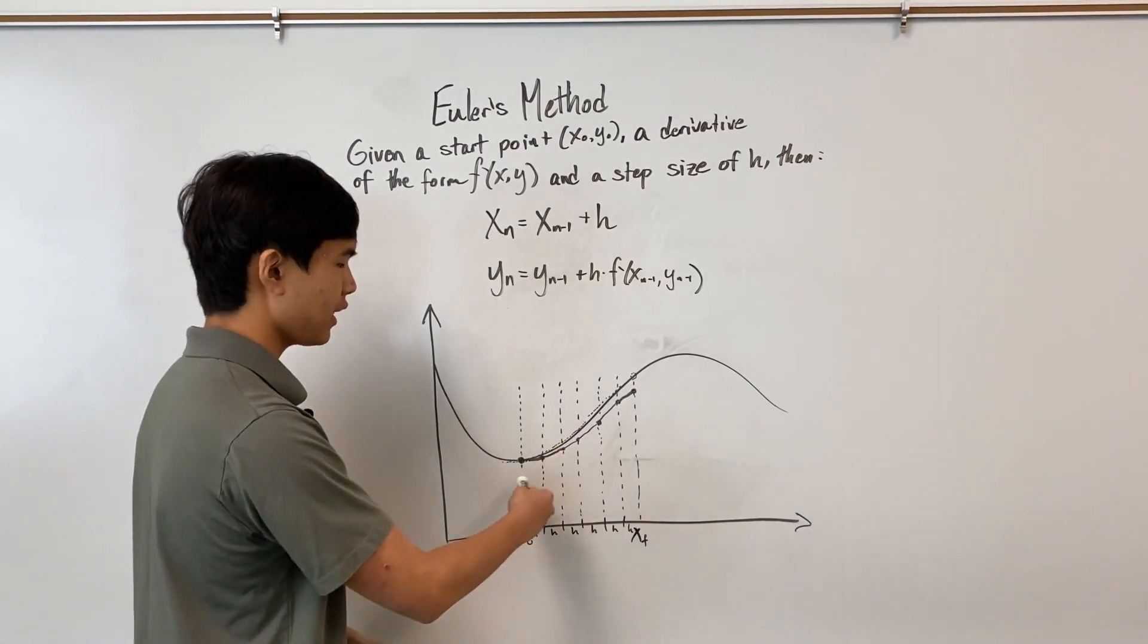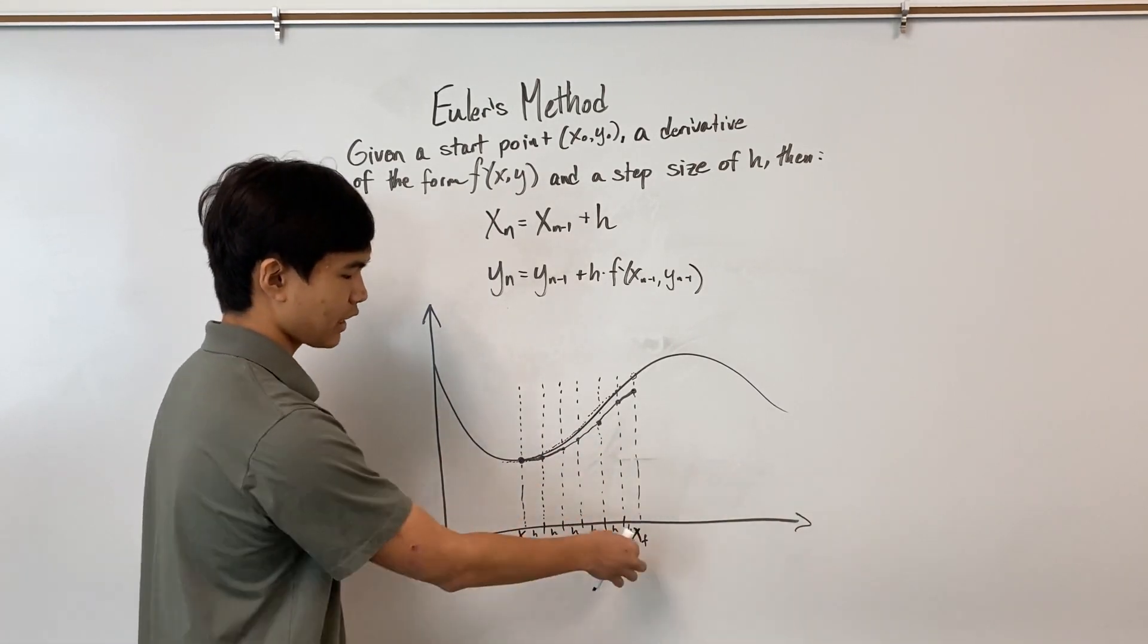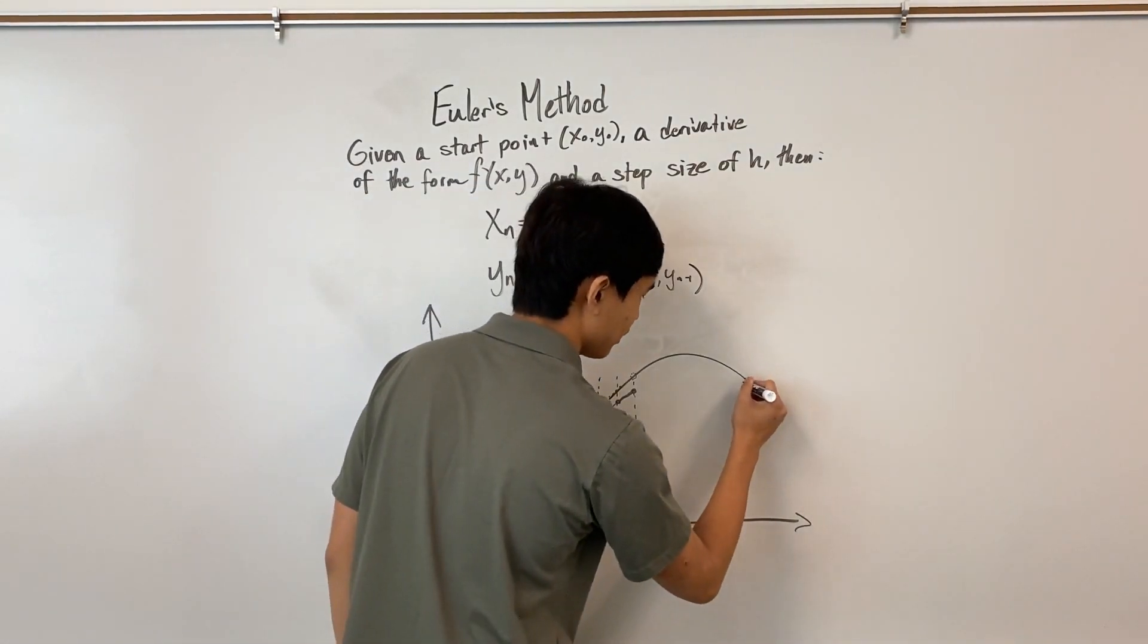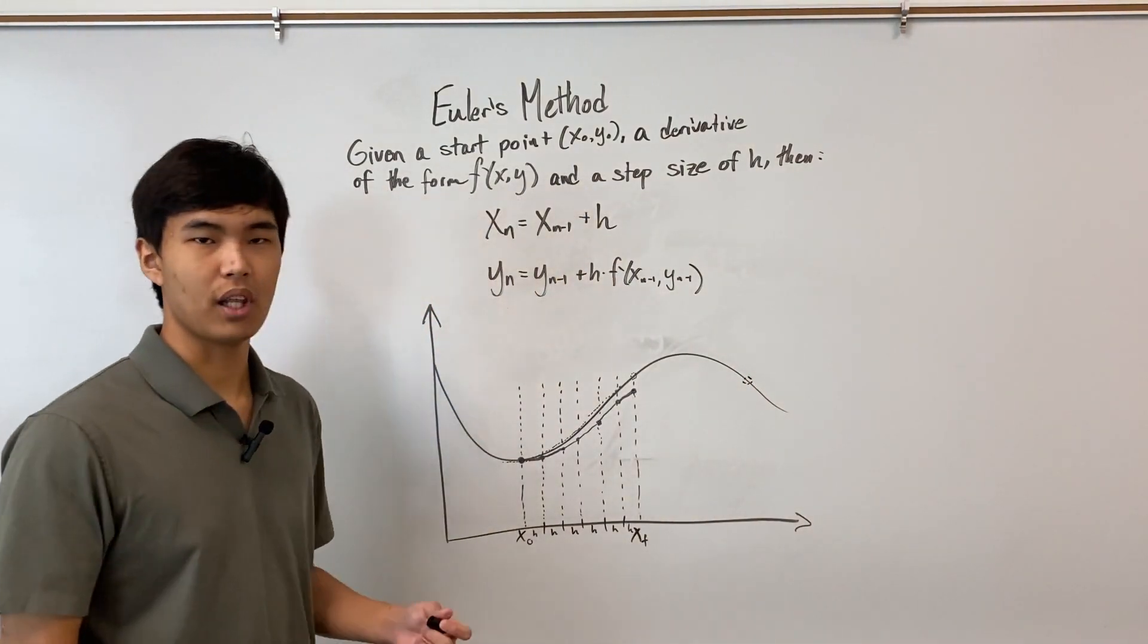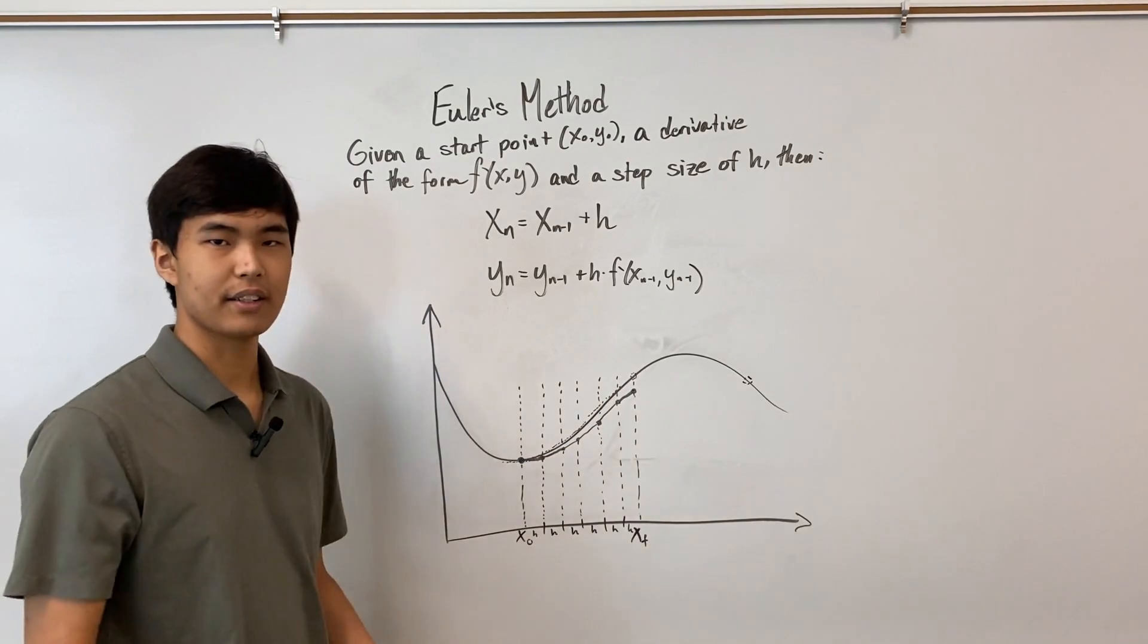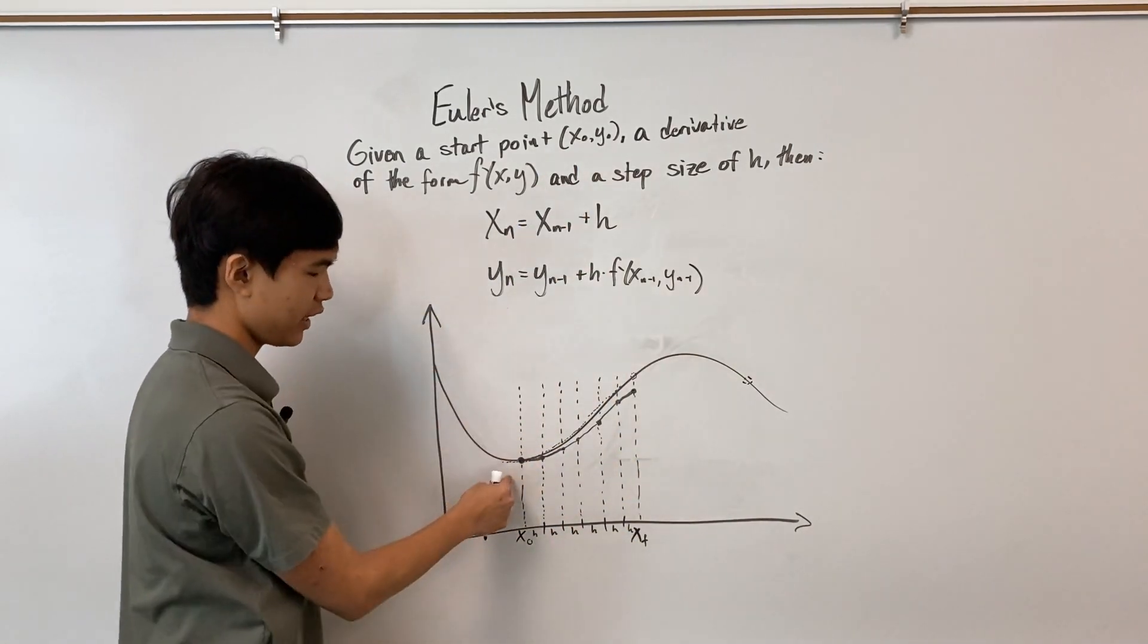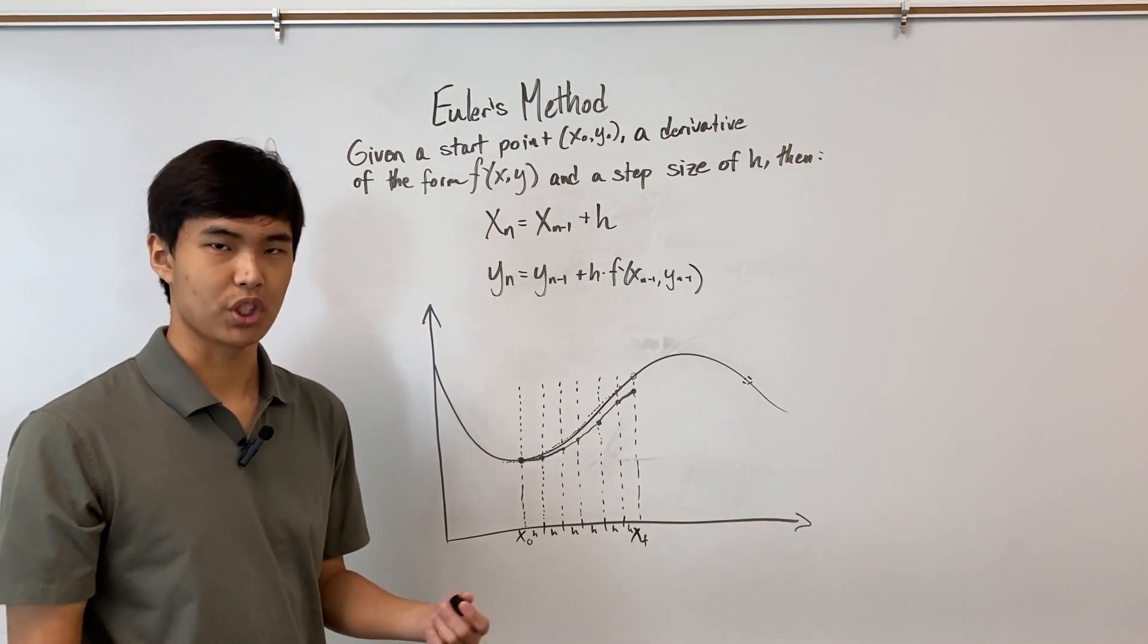And also, because these errors compound with each other, if we were estimating an x final, like here, that will be a lot less accurate than here. Because again, the errors compound. So as you go further from your start point here, you get a worse and worse approximation.